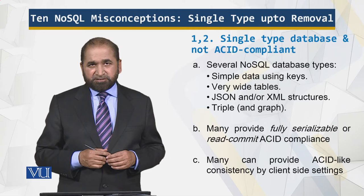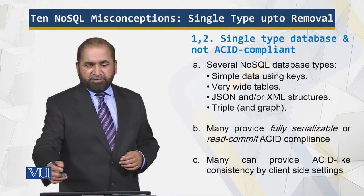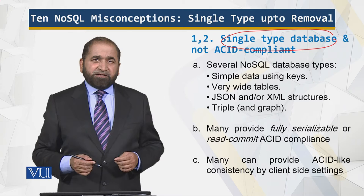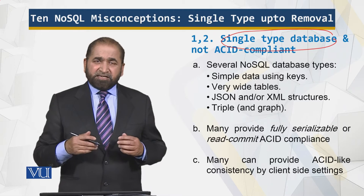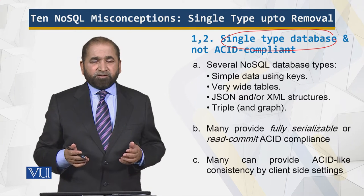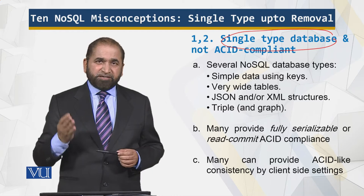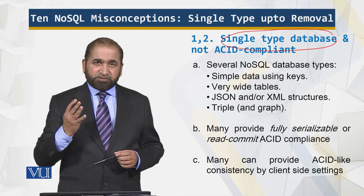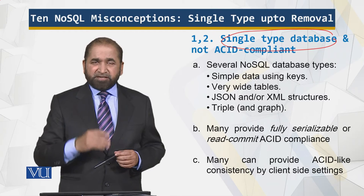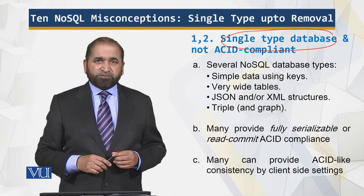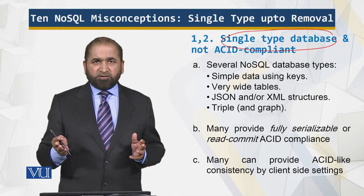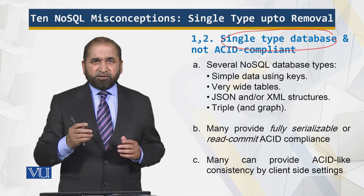Let's start with the misconception of NoSQL being a single type of database — that is not the case. Unlike the relational model, which only supports the relational model, NoSQL supports four different types of databases, not one, and three types of storage mechanisms. So if you look at the combinations, there's a wide variety. It is totally wrong that NoSQL supports only one type.